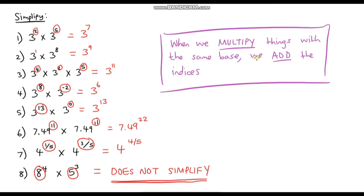To recap: what we've discovered in this video is that whenever we multiply things with the same base — whether numbers or variables — we always add the indices. In the next video we're going to look at dividing things with the same base, so brace yourself for some more fun. See you soon.